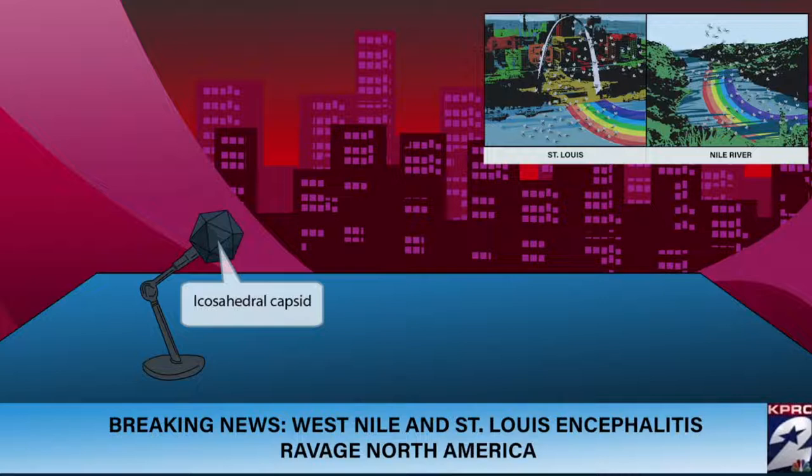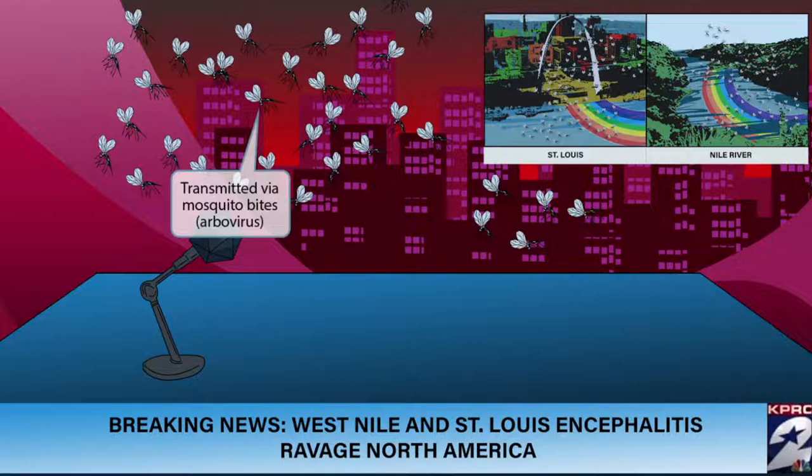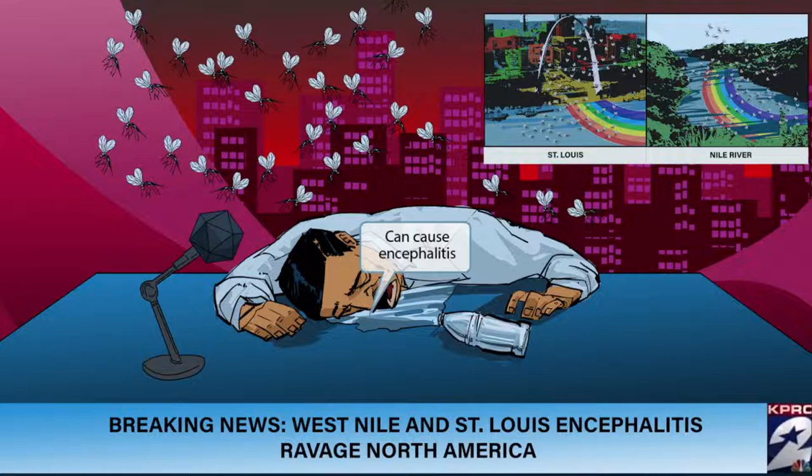The epidemic has spread so far that it's reached the news studio itself. You can see all the mosquitoes swarming the place, indicating that these viruses are transmitted through mosquito bites. The mosquitoes have drained most of the blood from the news anchor — he fainted and spilled his water. The water covering his head represents encephalitis, inflammation of his entire brain. Both St. Louis encephalitis and West Nile virus can cause encephalitis.